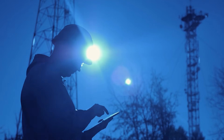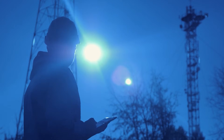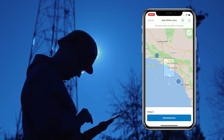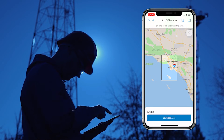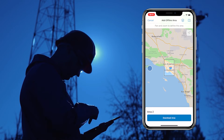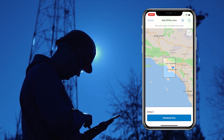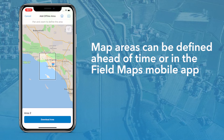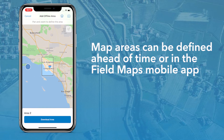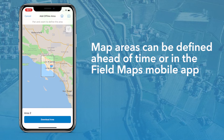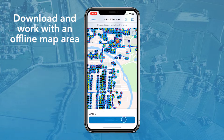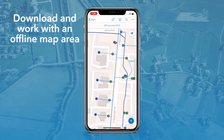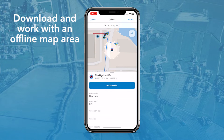If you'll be working in an area with an unreliable internet connection, you can use FieldMaps to create a map area that allows you to view assets and collect data while working offline. Map areas can be defined ahead of time or in the FieldMaps mobile app, and once the map area is downloaded, you can work with it offline just as you would any other map.